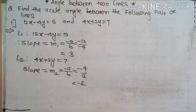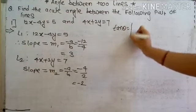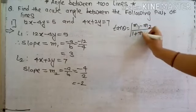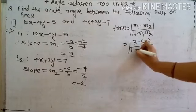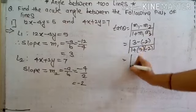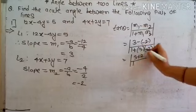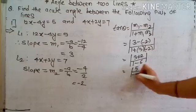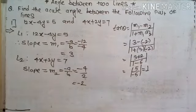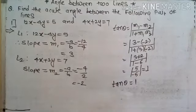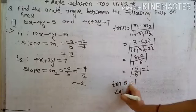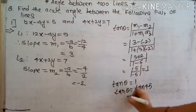After finding M1 and M2, we write the formula: tan theta equals mod of M1 minus M2 divided by 1 plus M1 into M2. That equals 3 minus minus 2 upon 1 plus 3 into minus 2, which is 5 upon 1 minus 6, giving 5 upon minus 5, equal to 1 in mod. So tan theta equals 1, and from the angle value table, tan 45 equals 1. Therefore theta equals 45 degrees.